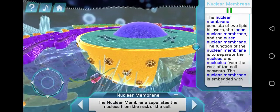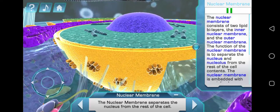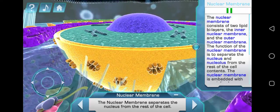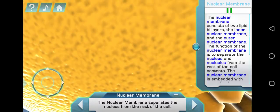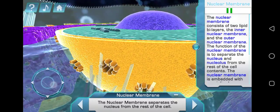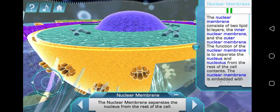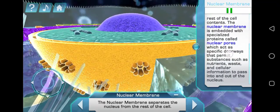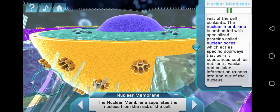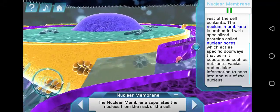The nuclear membrane consists of two lipid bilayers: the inner nuclear membrane and the outer nuclear membrane. The function of the nuclear membrane is to separate the nucleus and the nucleolus from the rest of the cell contents. The nuclear membrane is embedded with special proteins called nuclear pores, which act as specific doorways that permit substances such as nutrients, waste, and cellular information to pass into and out of the nucleus.